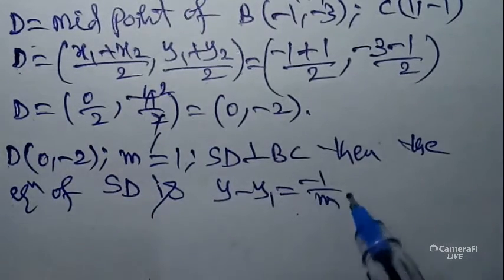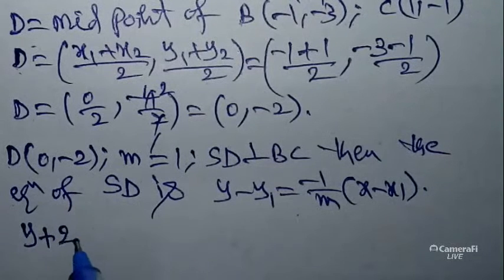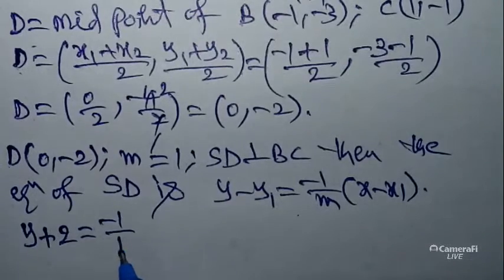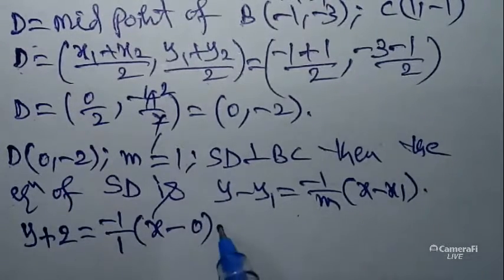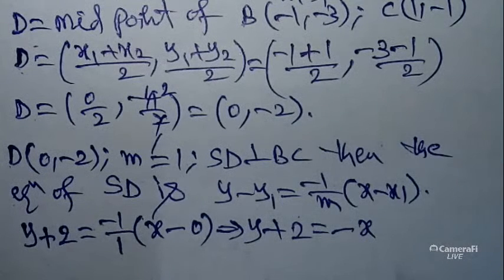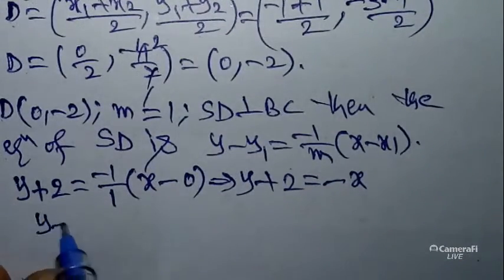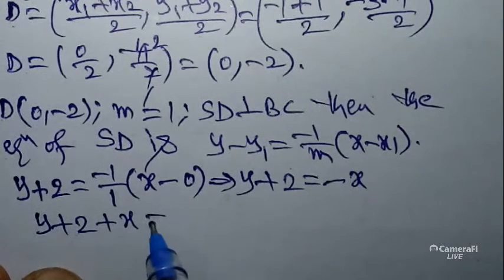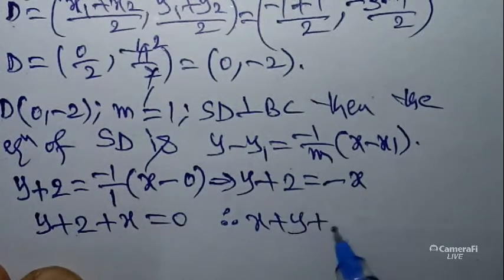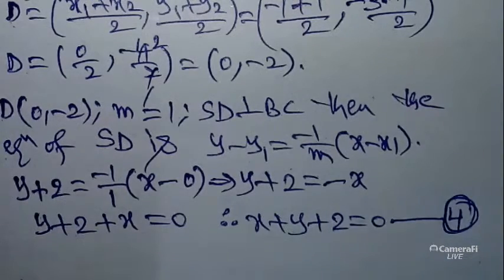Since SD is perpendicular to BC and slope of BC = 1, the slope of SD = -1/1 = -1. Equation of SD: y - (-2) = -1(x - 0), so y + 2 = -x, which gives x + y + 2 = 0. Let this be equation (4).